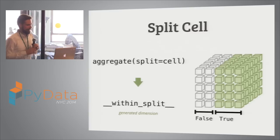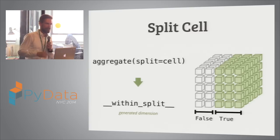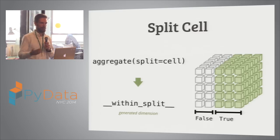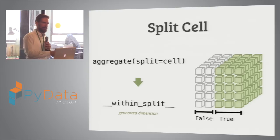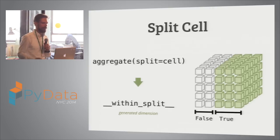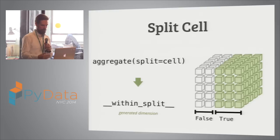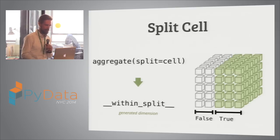Another nice feature is a split cell. It's an artificial dimension generated at query time. For example, I'm looking at year 2014 and I want to compare the first half and the second half of the year. I define the split cell as the first half of the year, and I will get the result split into two parts: the first part and the second part, using my contextual cell. It's an artificially generated dimension based on the query. It might not work on all backends, but it's implemented in the SQL backend.